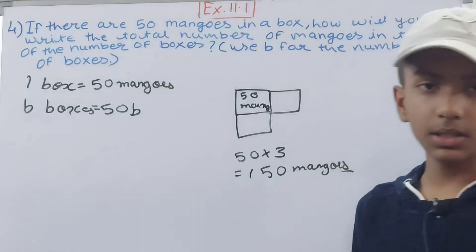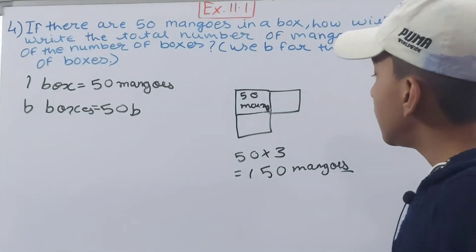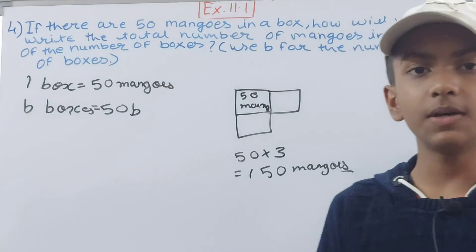So 50 × b, or 50b, is the number of mangoes you will have in terms of b boxes. Okay, and friends, this is all for today.